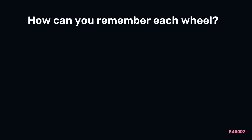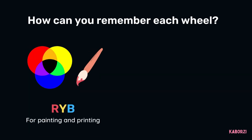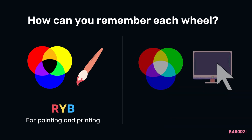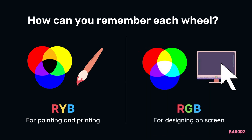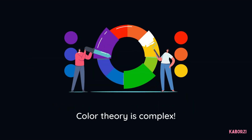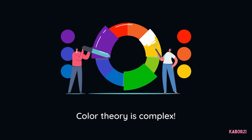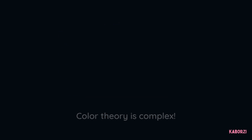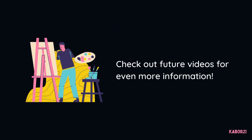So, what's your main takeaway from this? If you're going to paint or print something, RYB's the wheel for you. If you're going to design something that will appear on a screen, you'll use RGB. Color theory is complex, and we're just scraping the surface. In future videos, we'll go into more depth about how to use this artistic science to make your designs even more dynamic.